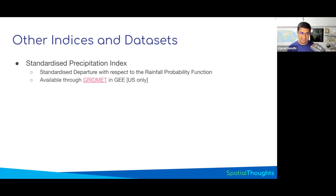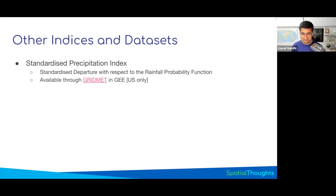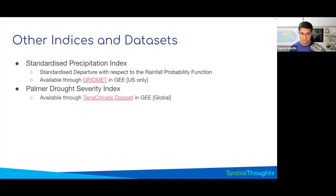GridMAT is US-only — if you're in the US, you can use the SPI computed by GridMAT directly in Earth Engine. There is also the PDSI, or Palmer Drought Severity Index, another popular drought index. You can find this in the TerraClimate dataset — there is a band called PDSI — giving you monthly PDSI values historically from the last 50 years, which you can use for your analysis.